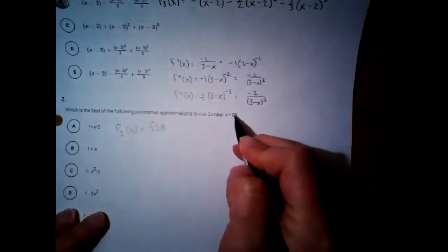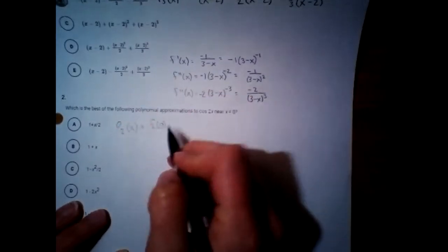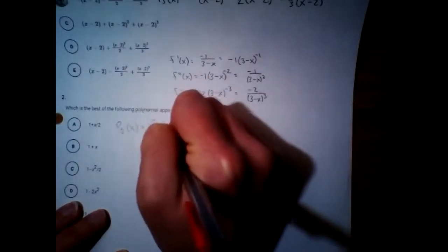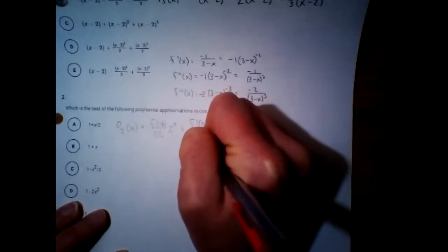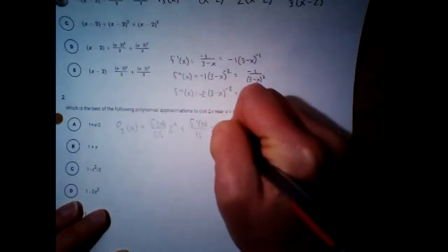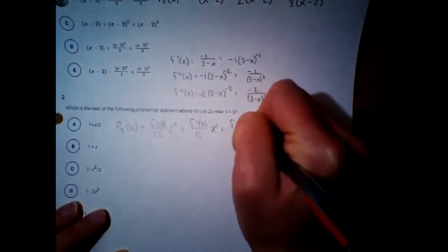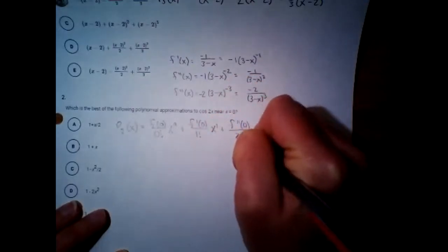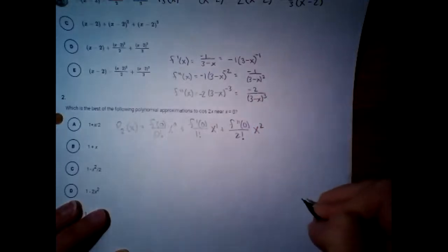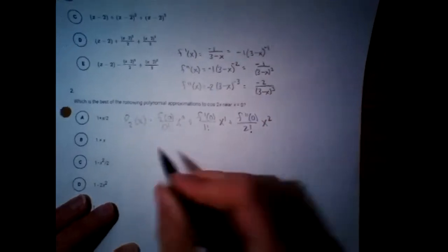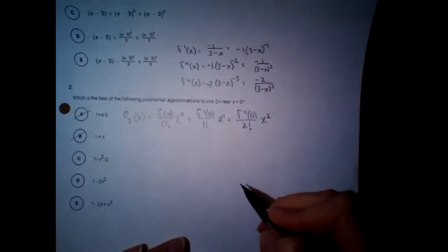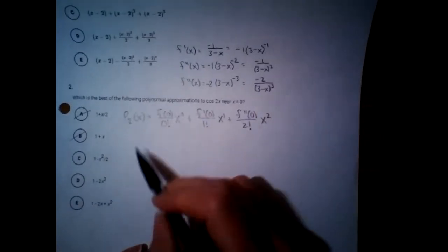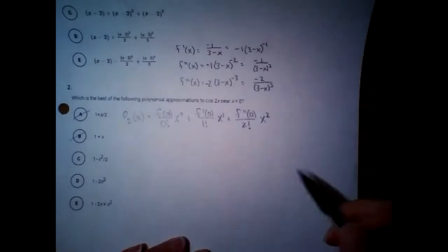This is centered around zero. So: f(0) over 0 factorial times x to the zero, plus first derivative at 0 over 1 factorial times x to the first, plus second derivative at 0 over 2 factorial times x squared. The higher the power, the better the approximation, so since the highest they went is squared, I'll do a second degree polynomial.